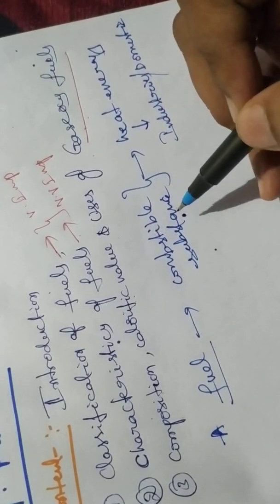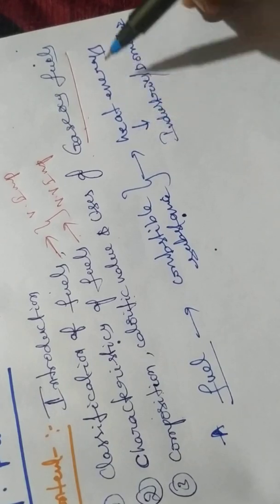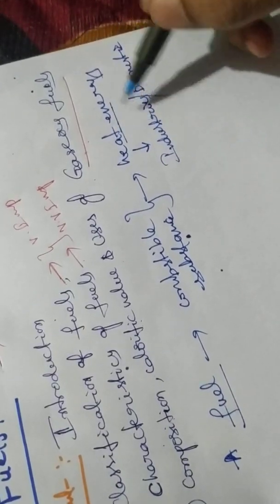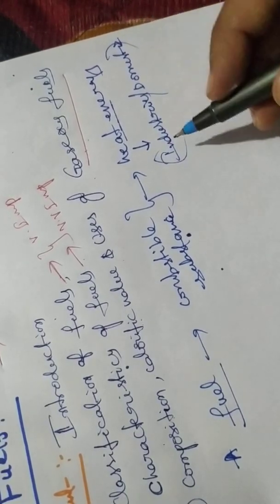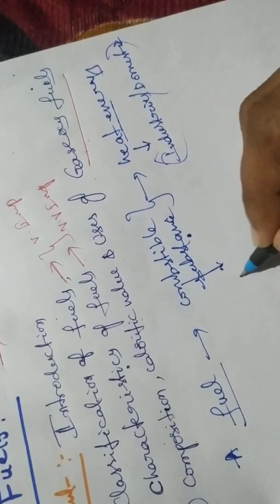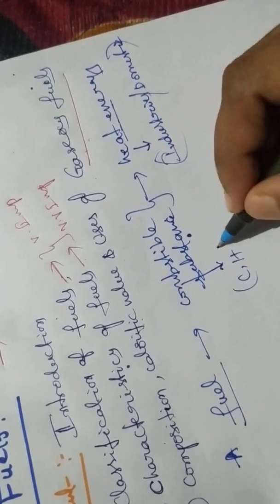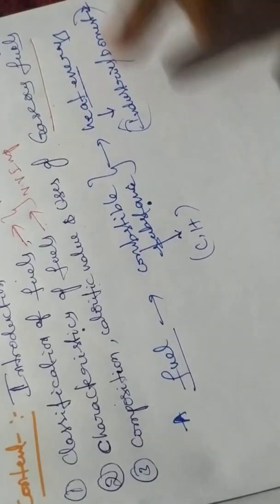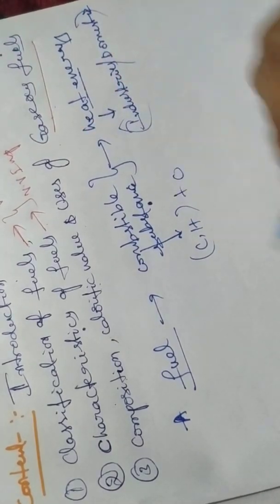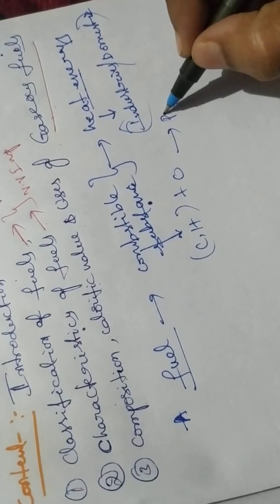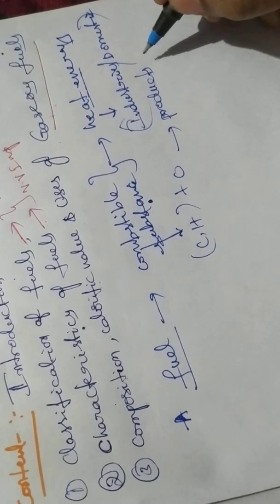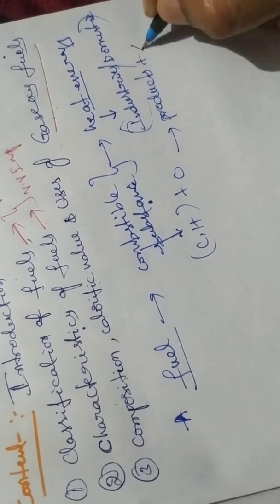Fuel is a combustible substance that burns in the proper way and gives a large amount of heat energy. That heat energy is used for domestic and industrial purposes. This combustible substance mainly contains carbon and hydrogen. When burning, it reacts with oxygen and gives products and heat energy.